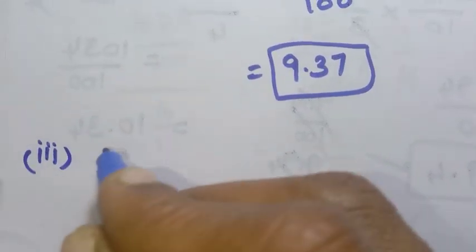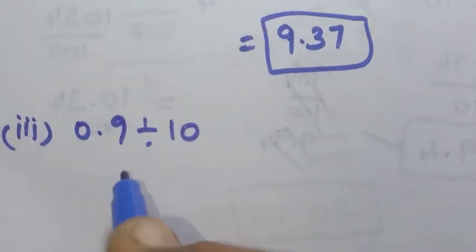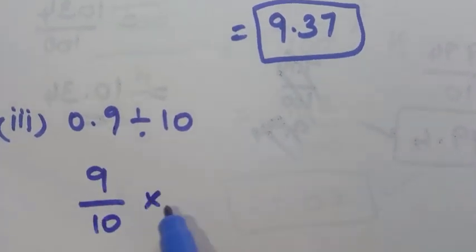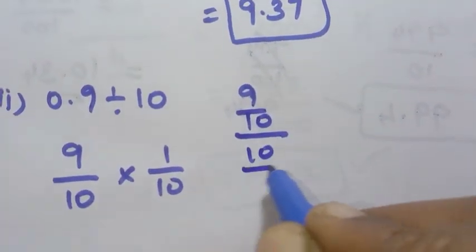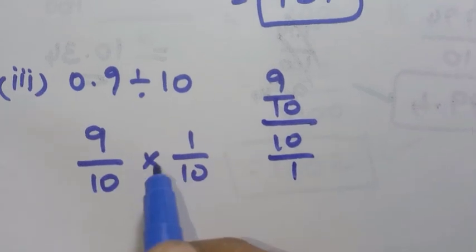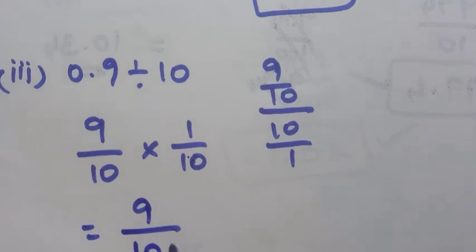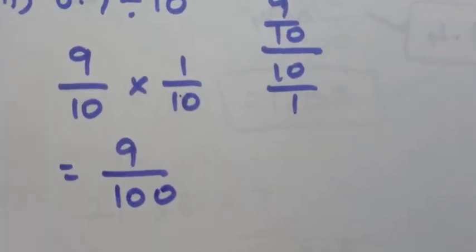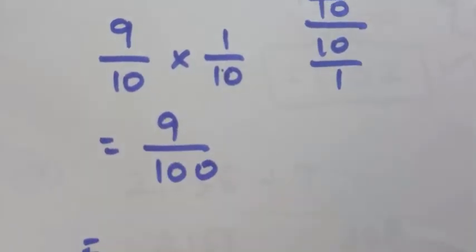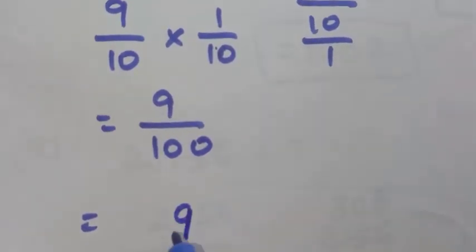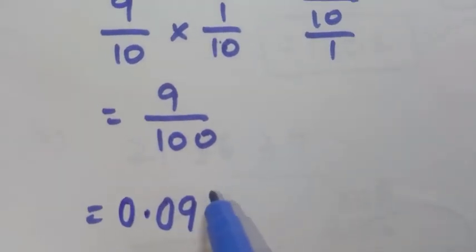Third one: 0.9 divided by 10. 0.9 has 1 decimal place, so it is 9 by 10. Divided by 10 by 1, so 9 by 10 into 1 by 10 gives 9 by 100. There are 2 zeros, so we need 2 decimal places. The answer is 0.09.